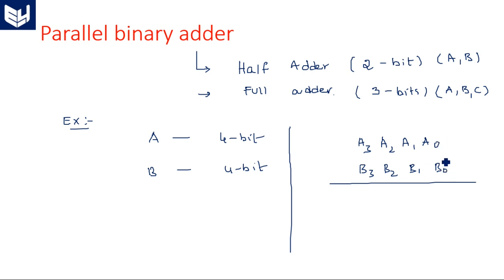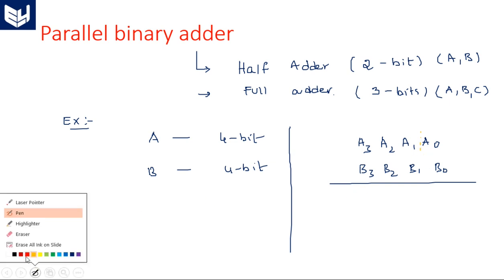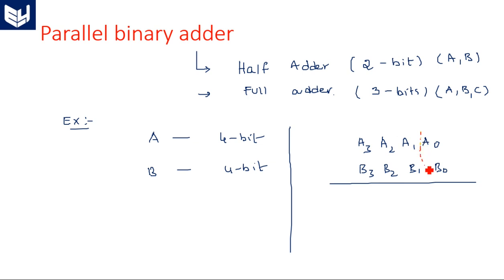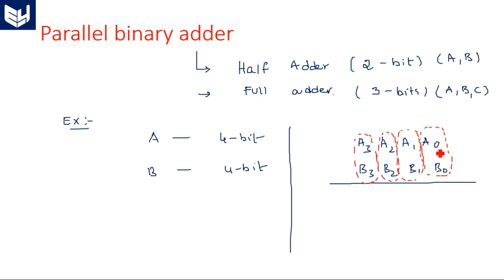When you add A0 and B0 first, there are only two bits, so we can use a half adder. We can also use a full adder by making the third input carry equal to zero.